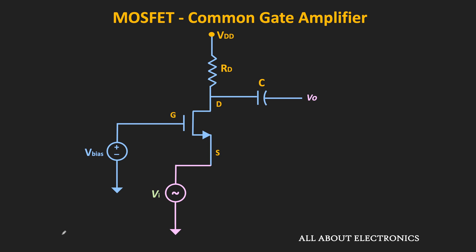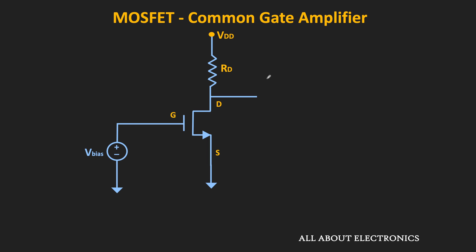This is a very basic common gate amplifier circuit along with biasing. The gate is biased with a fixed voltage. The AC input signal is applied at the source terminal, while the output is measured at the drain terminal. For DC analysis, this AC input signal acts as zero. This biasing voltage and the drain resistor must be set such that the MOSFET operates in the saturation region.